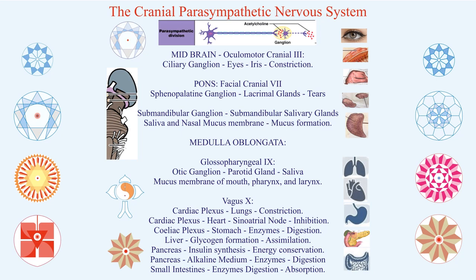Now come to the medulla oblongata, where you have two nerves: glossopharyngeal — the ninth cranial nerve — and vagus, the tenth cranial nerve. For the glossopharyngeal nerve, pre-ganglion fibers arise from the upper part of the medulla oblongata, go to the otic ganglion, and those fibers supply the parotid gland, producing watery saliva. The submandibular and sublingual salivary glands produce mucus-rich saliva, whereas the parotid produces watery saliva. The same fibers also supply the mucous membrane of the mouth, pharynx, and larynx — so in case of viral, bacterial, or fungal infection, the glossopharyngeal nerve protects us from those infections.